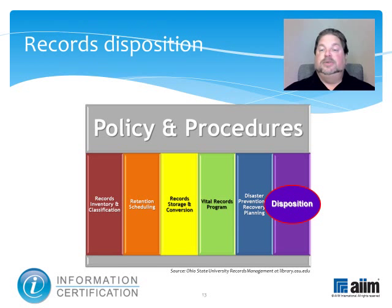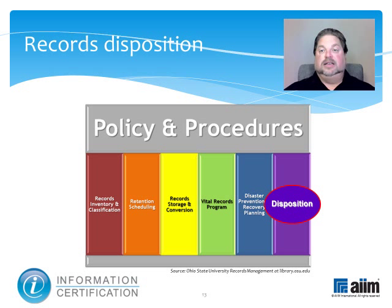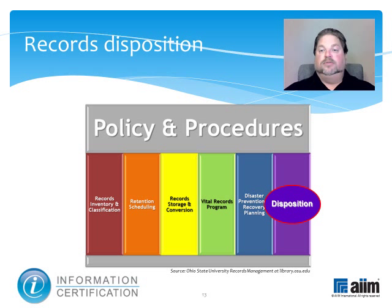The final stage of records management is disposition — when a record is either destroyed or permanently retained. These actions typically fall into one of two categories: destruction, via disposal and trash or recycling, shredding, macerating, incinerating, pulping, or deleting or other electronic obliteration; or transfer to an archives for permanent preservation. Regularly disposing of records lightens the load of what you have to retain and manage, and often makes legal counsel and compliance executives happy as well, since there are fewer places for potential smoking guns to be found.